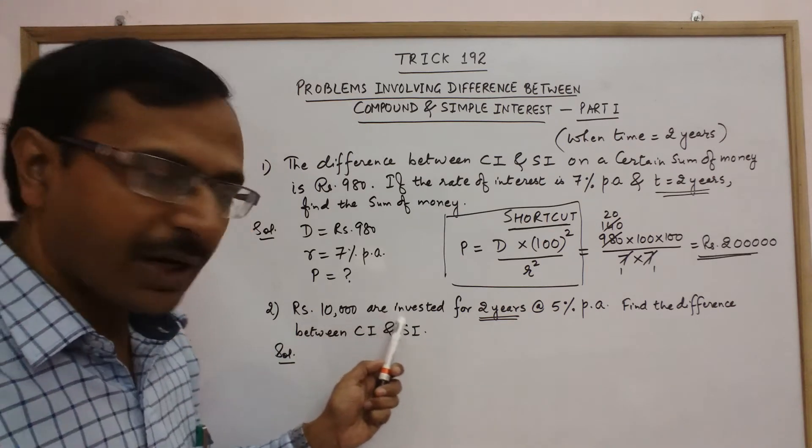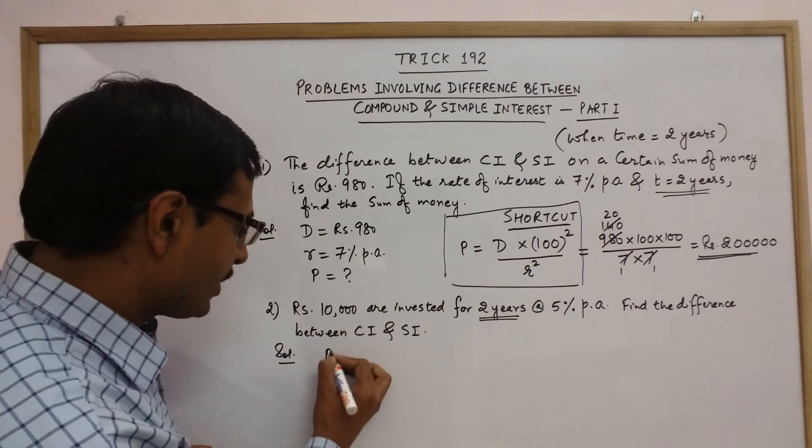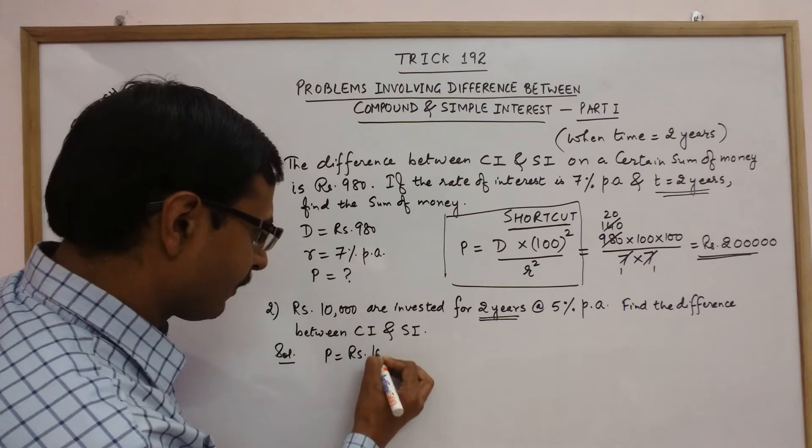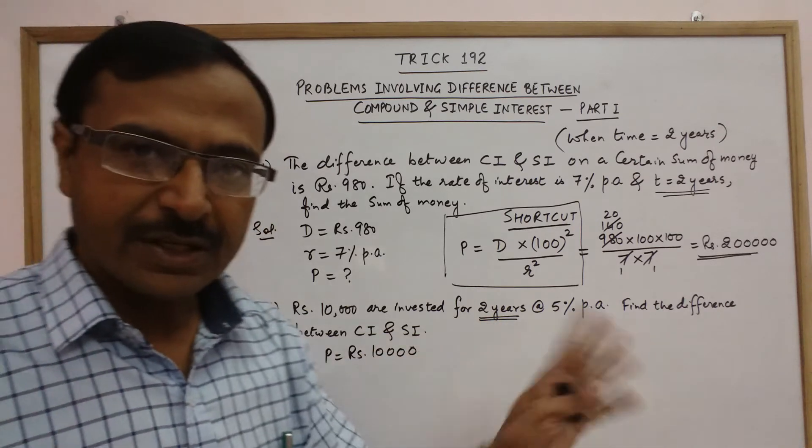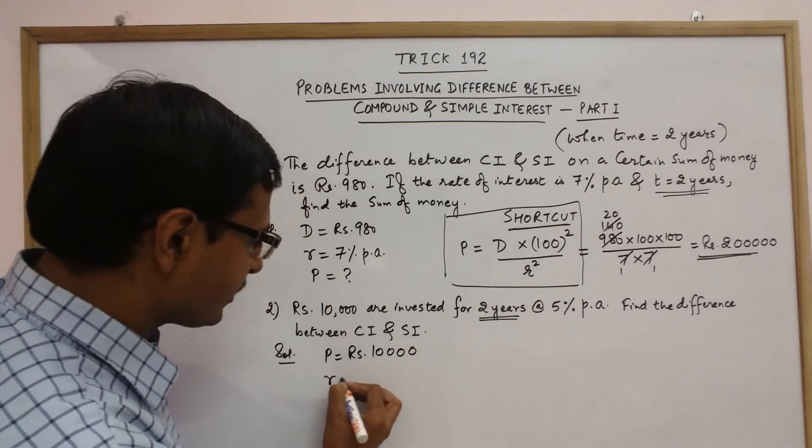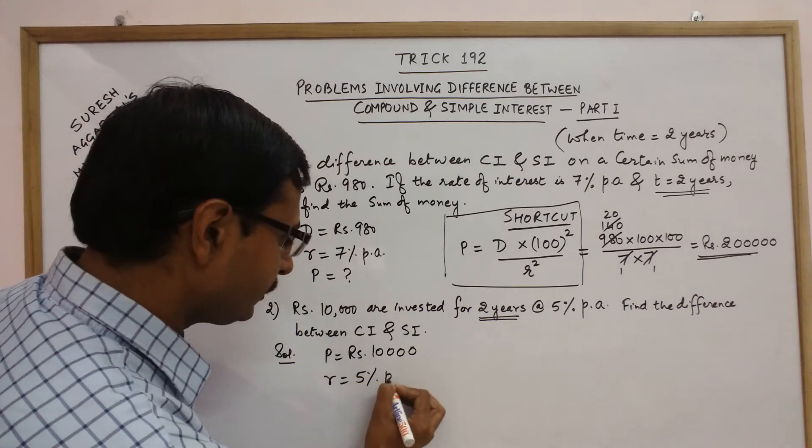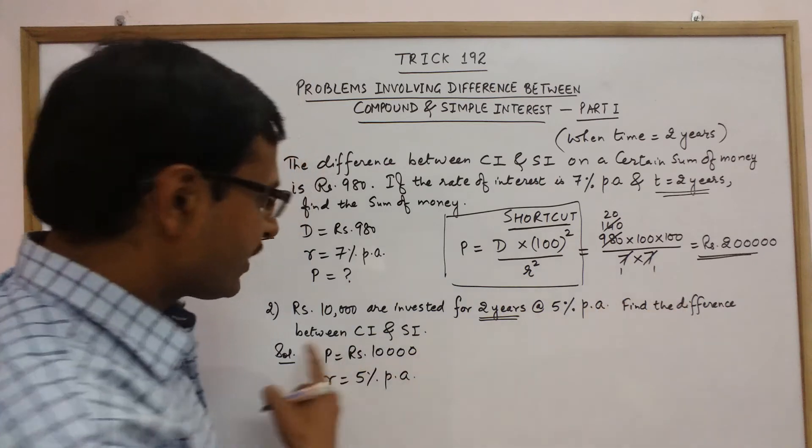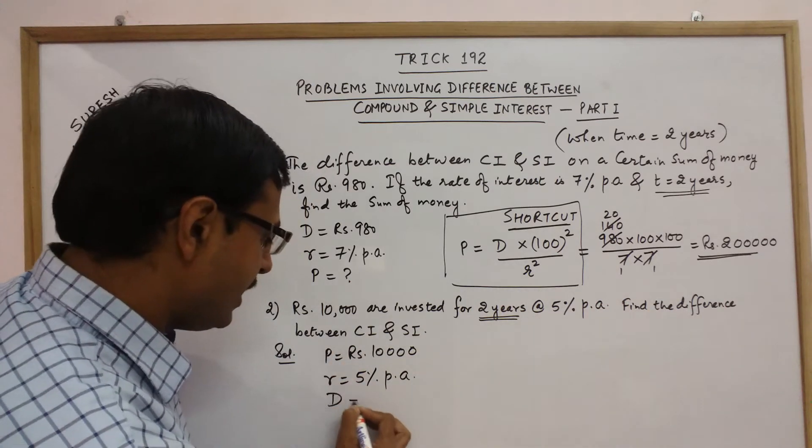Let us take one more problem. Rupees 10,000 are invested, so principal amount is rupees 10,000 for 2 years, obviously time is 2 years, at the rate of 5% per annum, so R is 5%. Find the difference between CI and SI. Now this time we need to find D.